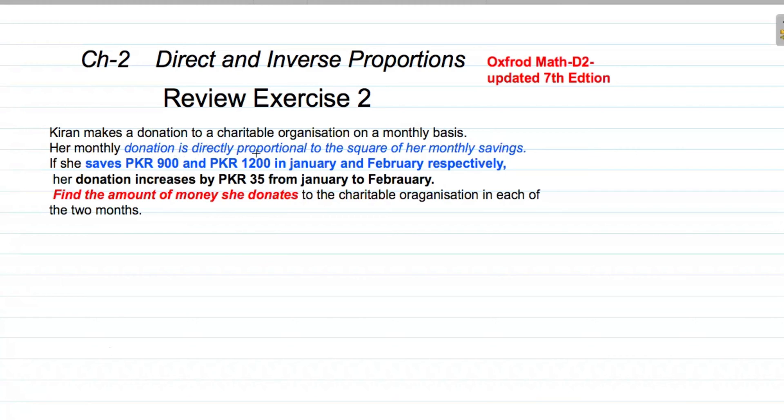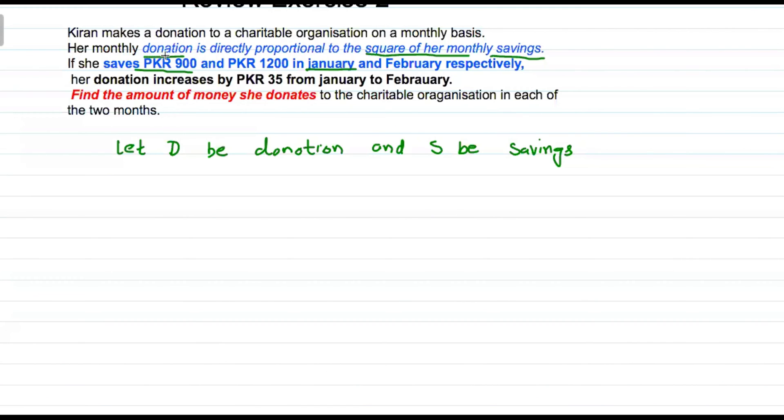Here we note that donation is directly proportional to the square of her monthly savings. Let D be the donation and S be the savings. The statement is directly proportional to the square of monthly saving, so D is proportional to S square.